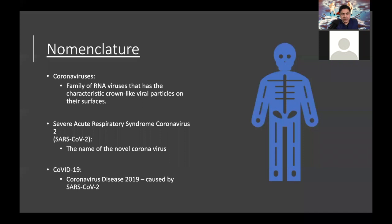I'll start with the nomenclature. Coronaviruses is a family of RNA viruses that has characteristic crown-like virions or viral particles on their surface. That family has more than about seven viruses. One of them is the novel virus we are experiencing, the severe acute respiratory syndrome coronavirus 2, or SARS-CoV-2, which caused the disease COVID-19. COVID-19 means the coronavirus disease in 2019.